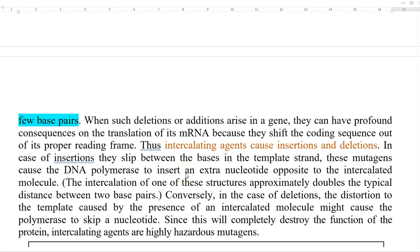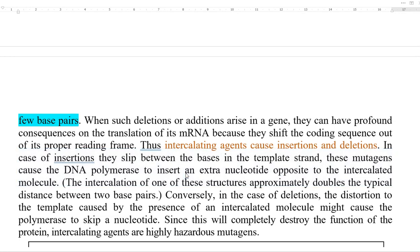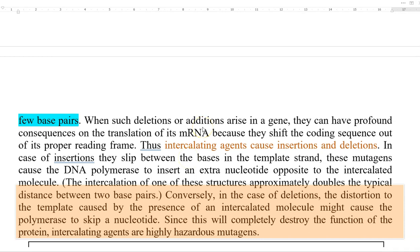In the case of insertion, the intercalating agent slips between the bases in a template strand, and this causes the DNA polymerase to insert an extra nucleotide opposite the intercalated molecule. Thus, the intercalation of one molecule approximately doubles the typical distance between two base pairs. In the case of deletion, the distortion to the template caused by the intercalation of a molecule — such as ethidium bromide, proflavine, or acridine orange — makes the polymerase skip a nucleotide, resulting in the production of faulty proteins. Thus, intercalating agents are classified as a highly hazardous mutagenic group of molecules.